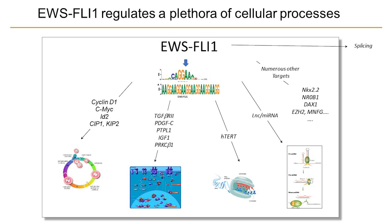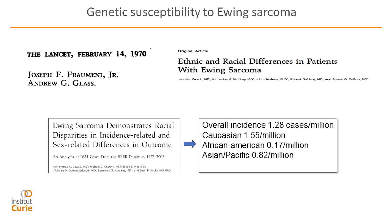Through these neo-enhancer elements, EWS-FLI1 can regulate in a completely abnormal way a plethora of cellular processes. Probably more than 1,000 genes in EWS-FLI1 cells are directly regulated by EWS-FLI1 through these neo-enhancer properties. We were interested by some particular aspect of Ewing sarcoma: Ewing sarcoma is almost only observed in populations of European descent — this is known for a long time, and the first to describe this was Joe Fraumeni — the same person we heard about this morning.